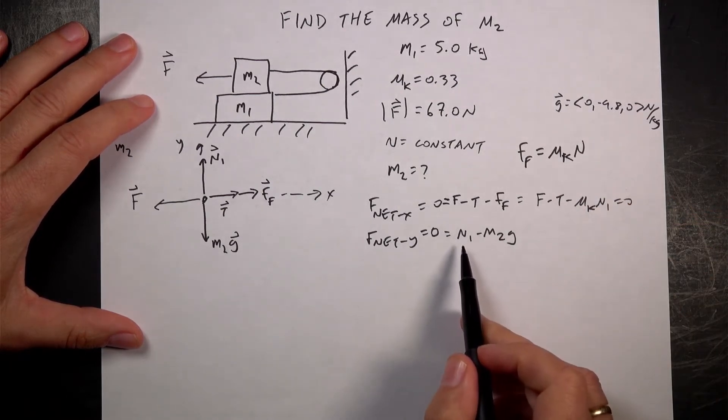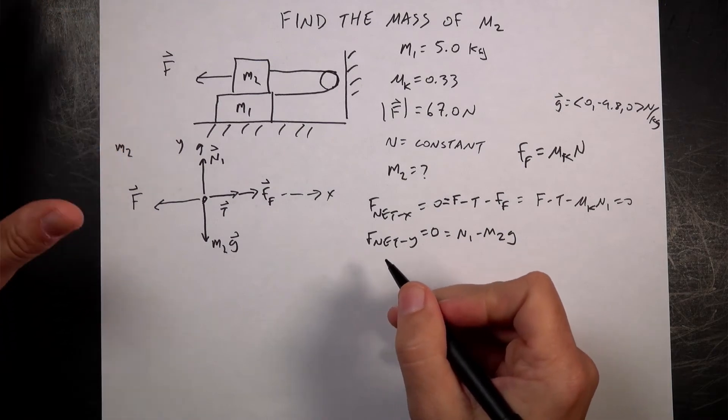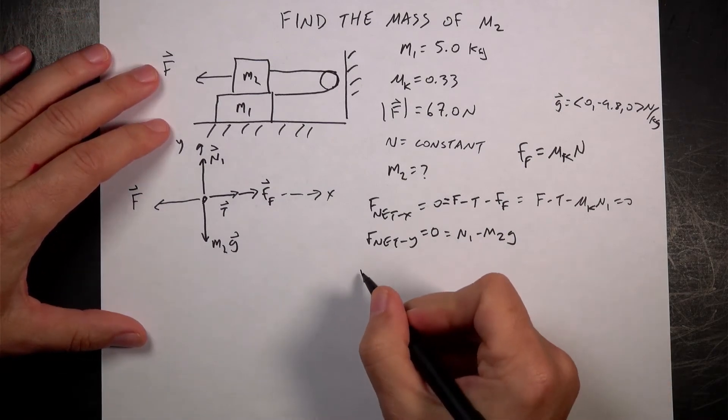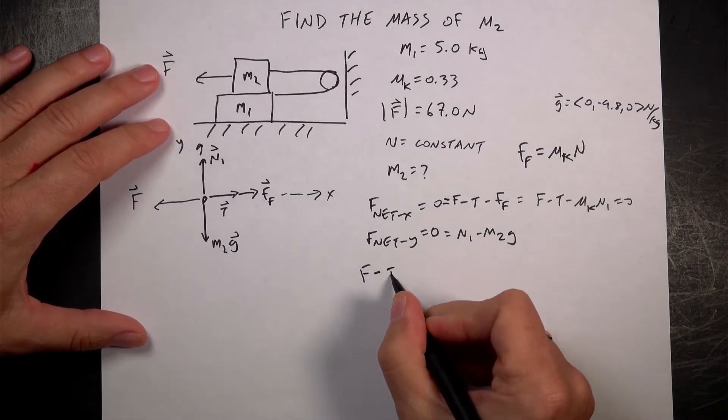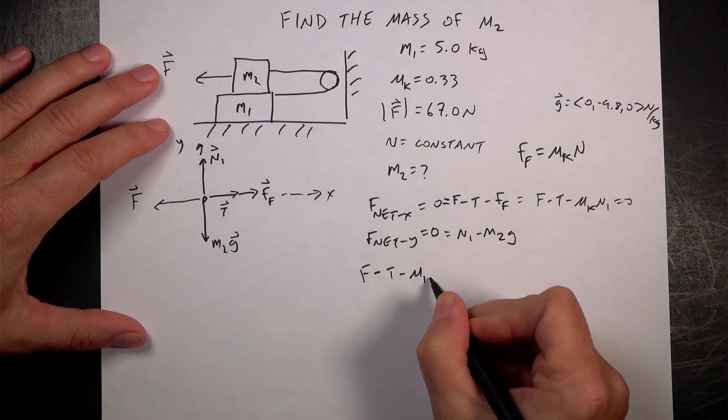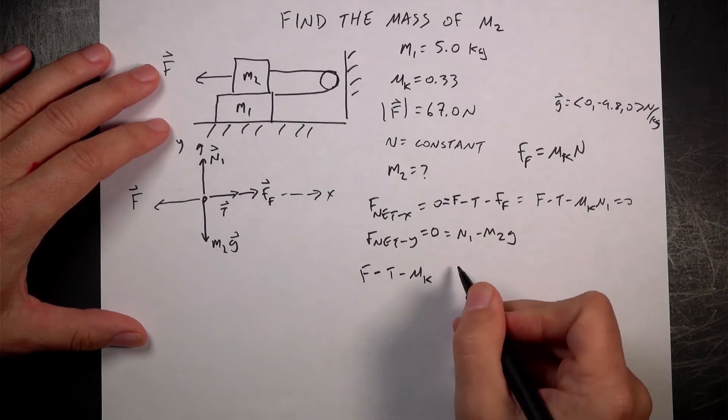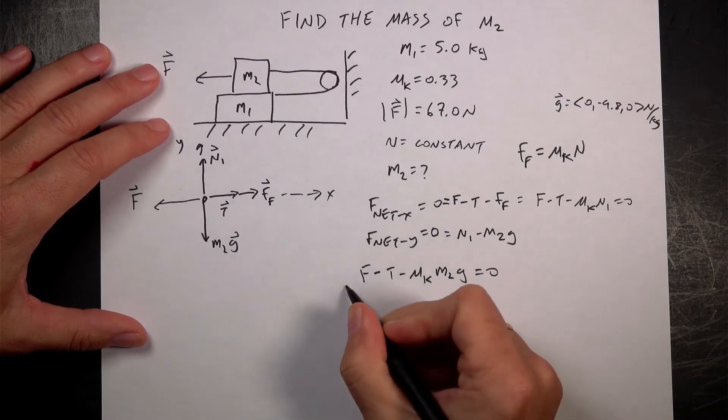And then down here, I can solve this for N1. So from this equation, I haven't even looked at block m1 yet. I get F minus T minus mu K and then N is equal to M2G. So I get M2G equals zero. So I'm going to put a box around that.